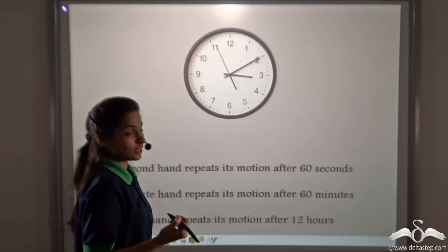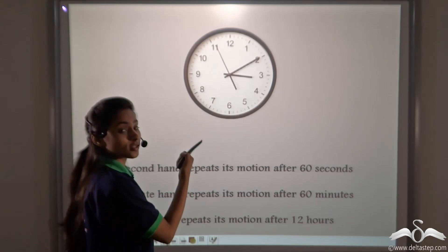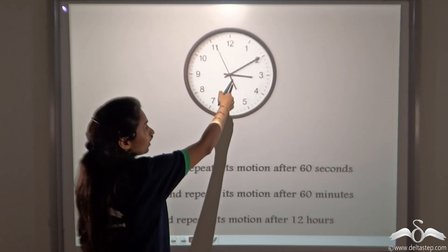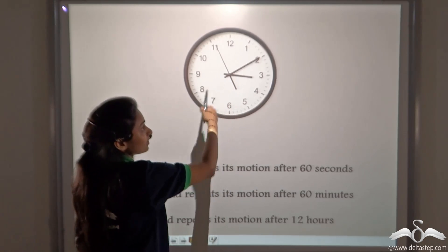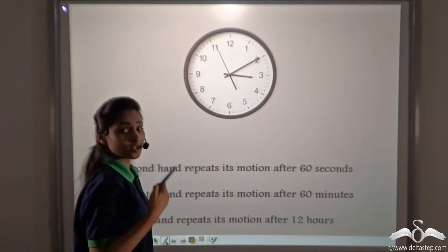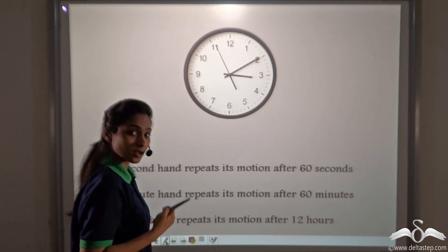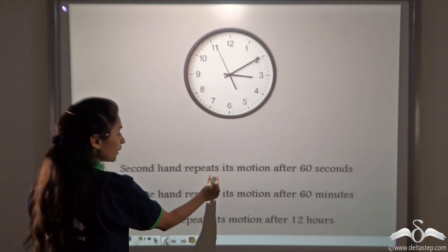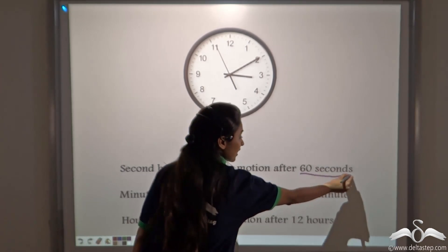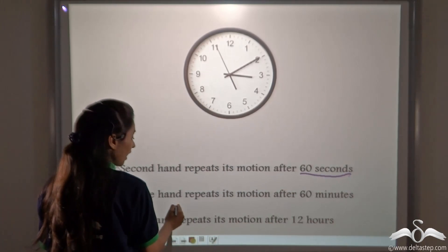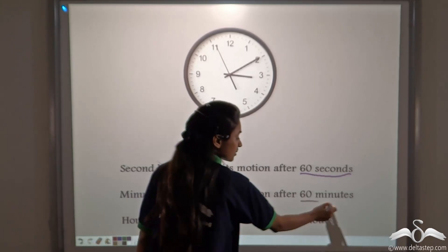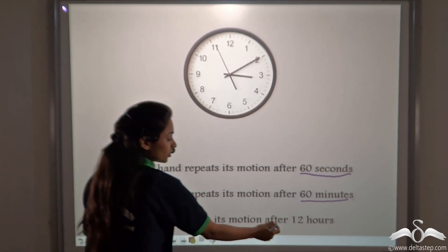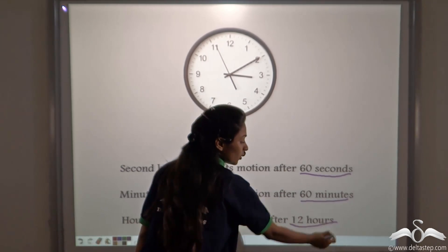We all have seen wall clocks in our homes. The motion of the hour hand, the minute hand, and the second hand changes its position after a fixed interval of time. The second hand repeats its motion after 60 seconds, the minute hand repeats its motion after 60 minutes, and the hour hand repeats its motion after 12 hours.